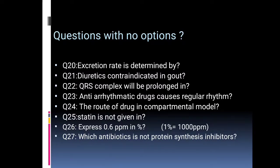Statins: express 0.6 ppm — in 1%, it is 1000 ppm. Which antibiotic is not a protein synthesis inhibitor? The options are not given, but you should revise the protein synthesis inhibitors.